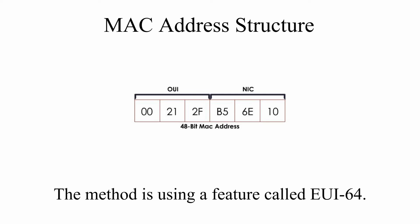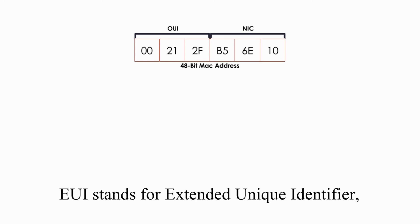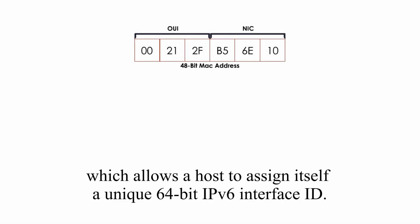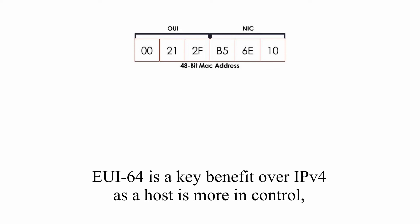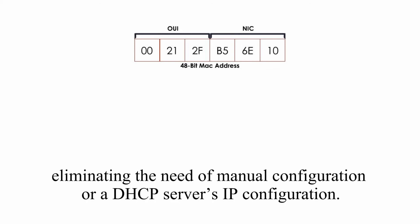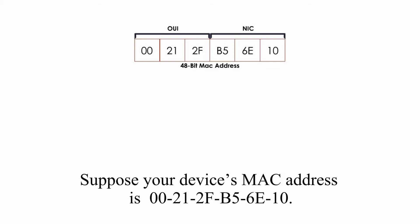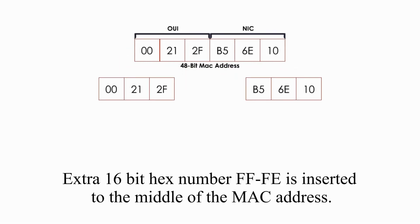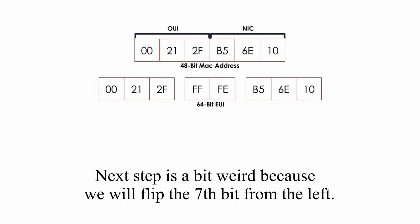How does a device self-generate a 64-bit long interface ID with a 48-bit long MAC address? This method uses a feature called EUI-64. EUI stands for Extended Unique Identifier, which allows a device or host to assign itself a unique 64-bit IPv6 interface ID. EUI-64 is a key benefit over IPv4 as the host is more in control, eliminating the need for manual configuration or a DHCP server. Suppose your device MAC address is 00212FB56E10. An actual 16-bit of hex number FFFE is inserted into the middle of the MAC address. Now we have a 64-bit ID. The next step is a bit weird because we will flip the 7th bit from the left.